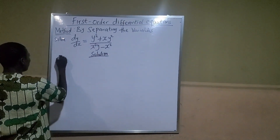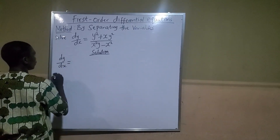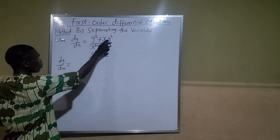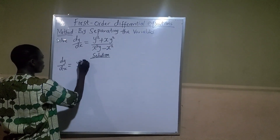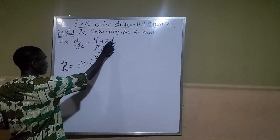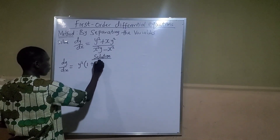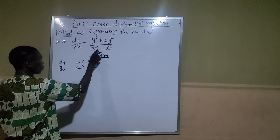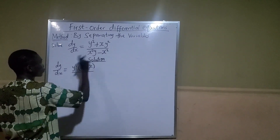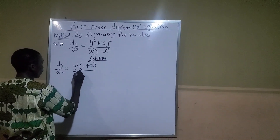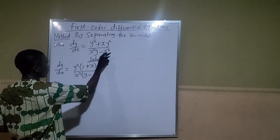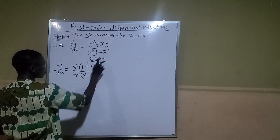We have dy over dx equals... Now, what is common here? You can see that y squared is common in both terms, so I'll bring y squared out and open the bracket. If I bring y squared out, I'll be left with one plus — and here I'll be left with x. What is common here? x squared is common in both, so I'll bring out x squared. If I bring out x squared, I'll be left with y here minus, and if I bring x squared out here, I'll be left with one.